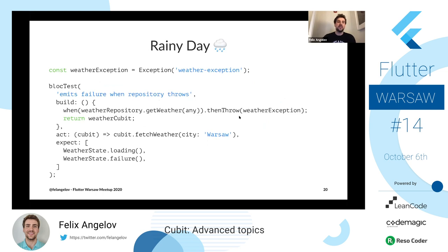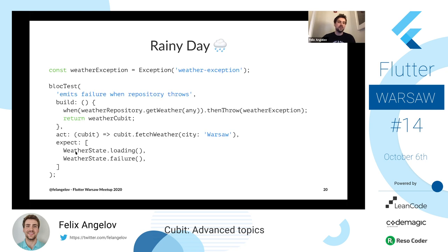To handle the rainy day scenario, we define a generic exception. Just like before we stub the repository, but this time using thenThrow instead of thenAnswer and pass that exception. We call fetch weather again with Warsaw, and now we expect a failure state after loading because the repository throws the exception. The setup overall stays pretty much the same — only the stubbing step and the expectation change, which is nice and consistent.